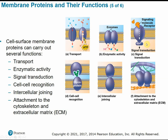Some membrane proteins work for signal transduction — they can receive signals from other cells and send those messages to trigger a response from the host cell. For example, when a cell receives a hormone signal, it binds to that protein receptor. Cell-to-cell recognition involves proteins that recognize and bind to identifying carbohydrate chains or glycoproteins on the surface of another cell — those self-identifying markers that allow the immune system to distinguish between self and non-self. Cell-to-cell joining includes tight junctions and desmosomes that physically attach cells to form continuous tissues.